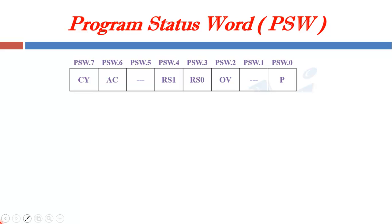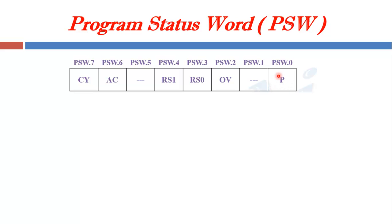This is the structure of the 8-bit PSW register. Out of these 8 bits, 4 are conditional flags. These 4 conditional flags are CY (carry flag), AC (auxiliary carry flag), OV (overflow flag), and P (parity flag). Other than these 4 conditional flags, there are 2 bits for selection of register bank — RS1 and RS0. And remaining 2 bits are unused, represented by a dash mark. Each bit in the PSW register can be accessed using the register name and its bit position. For example, the parity bit is at the 0th position, so it is represented as PSW.0.